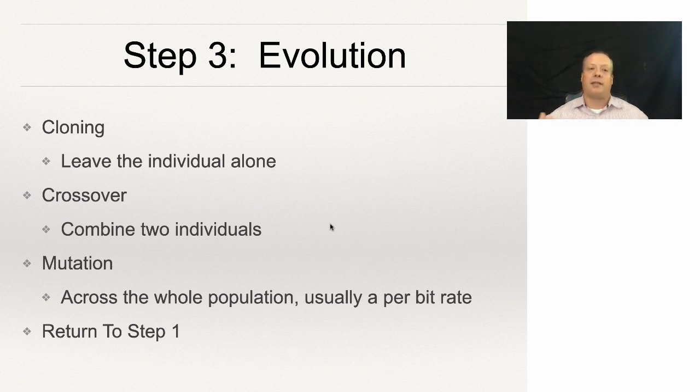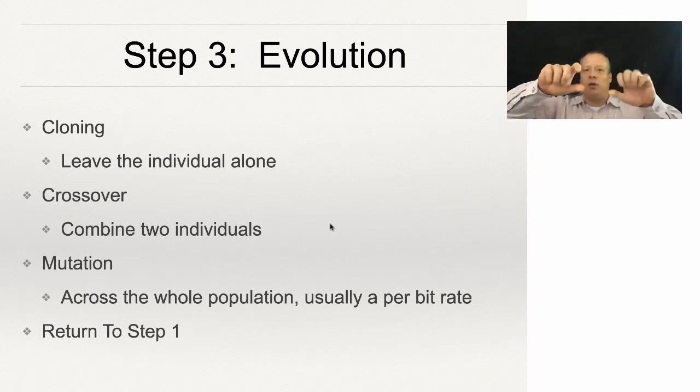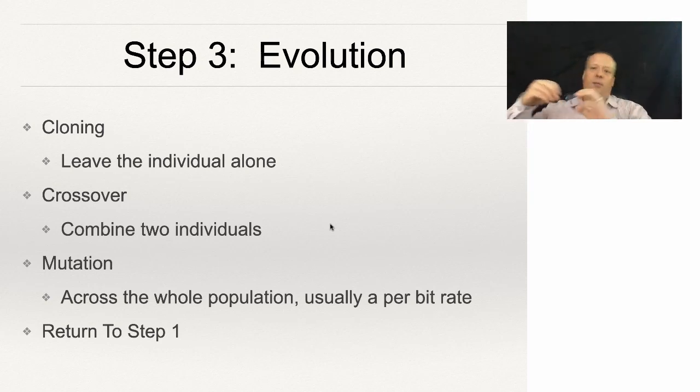Typically, the standard numbers I was taught when I was in grad school is that 70% of the population is usually cloned where we just move it over directly as it is. But the more interesting aspect is the other 30%, which is crossover. With crossover, we take two individuals and we split them in half, recombine them, and create a new child individual or a pair of child individuals from that parent.